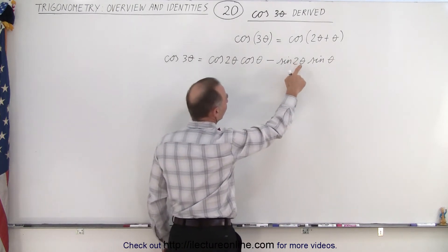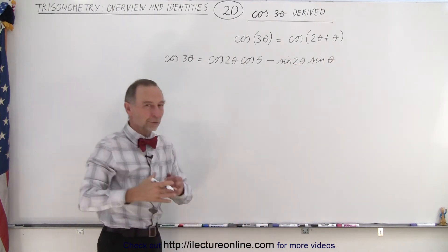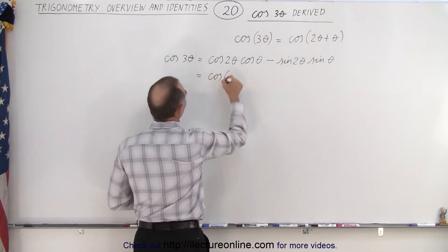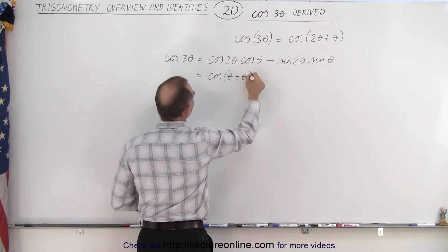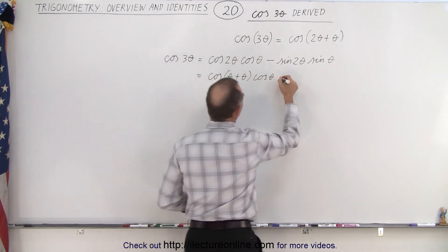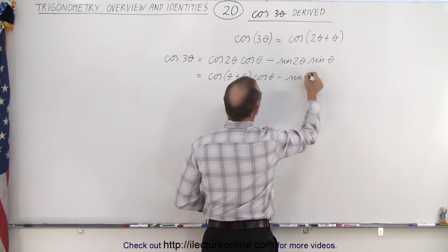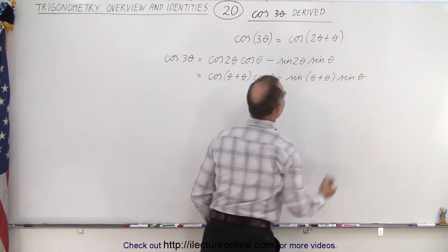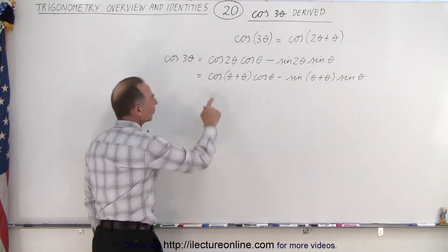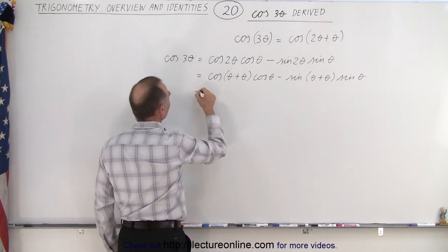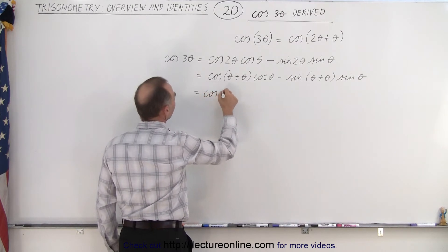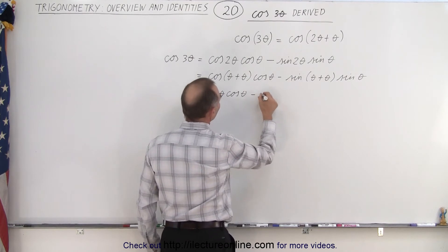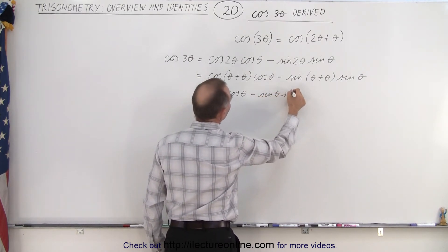We still have the cosine of two theta and the sine of two theta, so we're going to write those again as the sum of two angles. This can be written as the cosine of theta plus theta times the cosine of theta, minus the sine of theta plus theta times the sine of theta. The cosine of the sum of two angles equals the cosine of the first angle times the cosine of the second angle minus the sine of the first angle times the sine of the second angle.